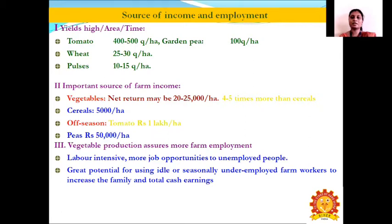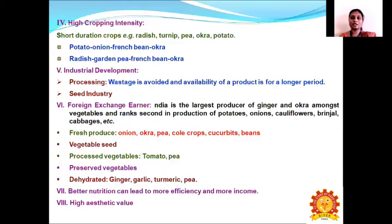In cereals we can get about only 5,000 rupees per hectare. Even in off-season, by cultivating tomato we can get about 1 lakh rupees per hectare, whereas by cultivating peas we can get about 50,000 per hectare. Vegetable production also assures more employment as it is labor-intensive, providing job opportunities to unemployed people, and has great potential for using idle or seasonally underemployed farm labor, increasing total cash earnings.